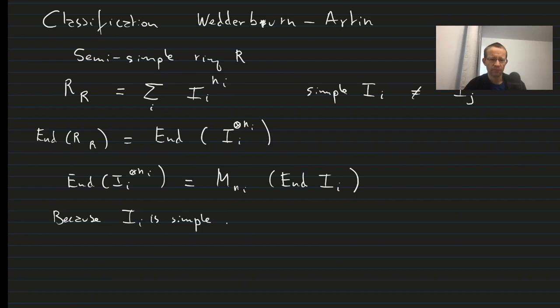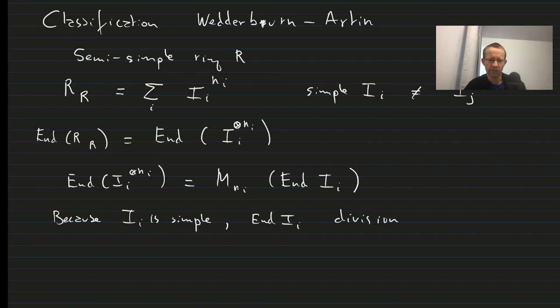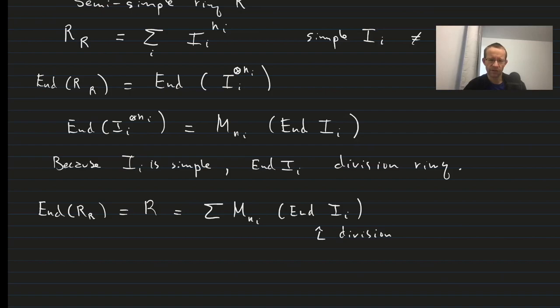So therefore the endomorphisms form a division ring, namely we can invert each element. So what we finally get is that the endomorphisms of the right module, which is nothing but the ring, is equal to the sum of M_NI, the endomorphisms of II, where this is necessarily a division ring. So you get a direct sum of division ring matrix algebras.